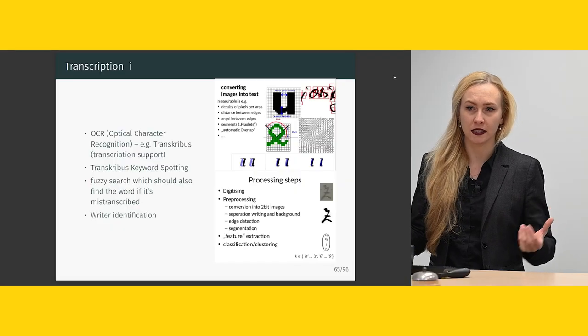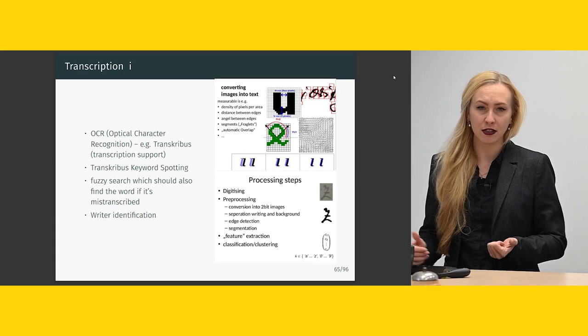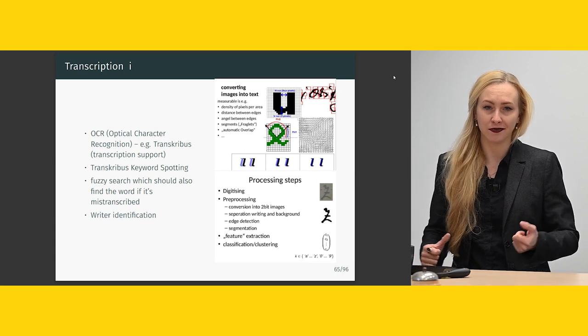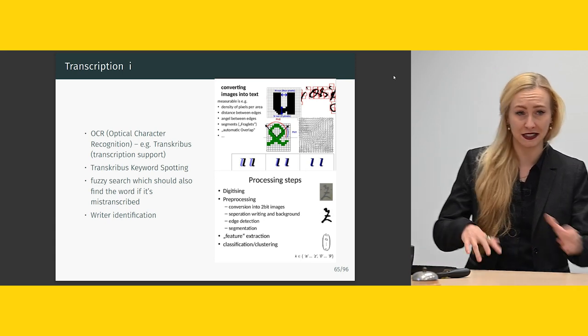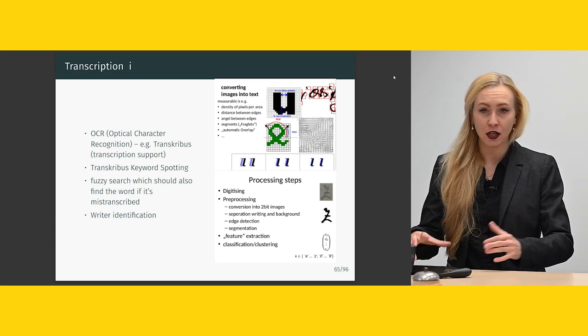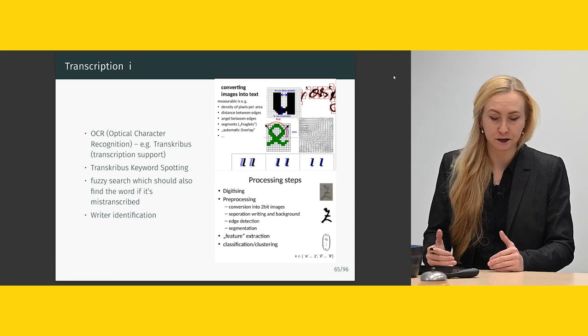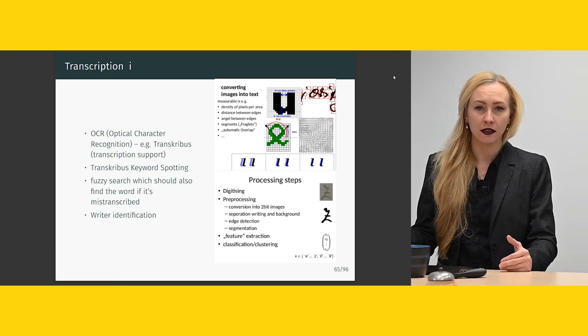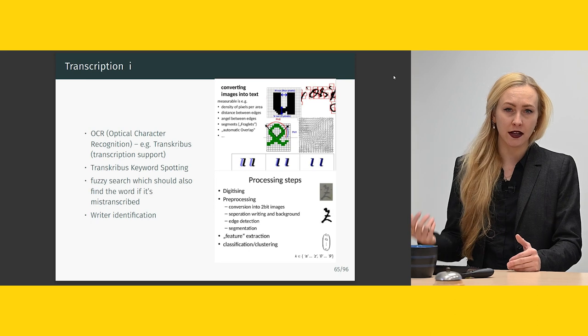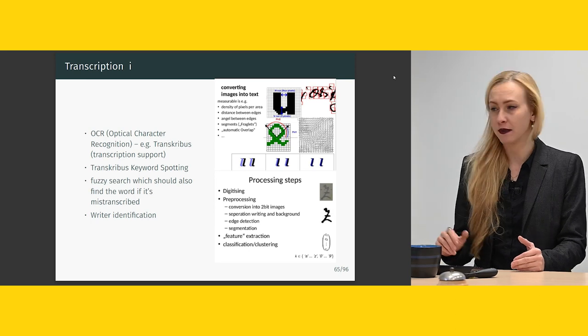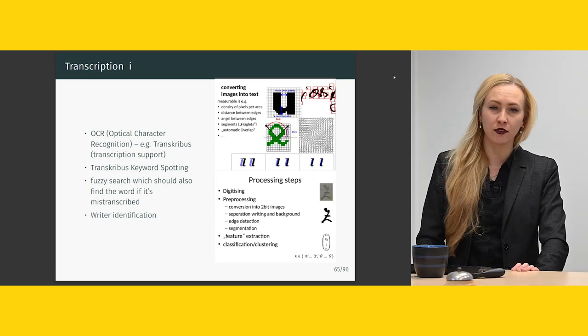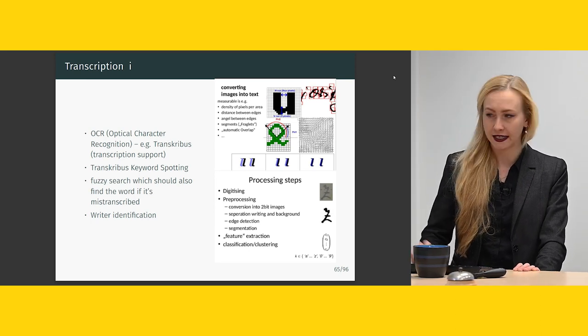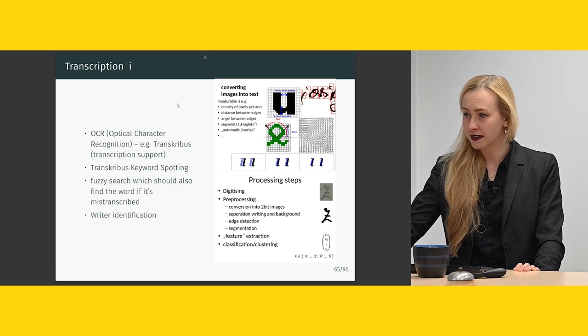Transcribers has lots of features such as transcribing, reusing models — there's a big user base that creates models and shares them so you can reuse other people's work or help improve it. You can train your own models and collaborate on bigger projects, but you can also use it as an individual user. There are also features like keyword spotting, developed for archives, where the machine manages to spot certain keywords in texts that aren't fully HTR'd.